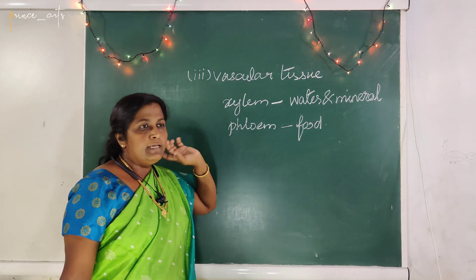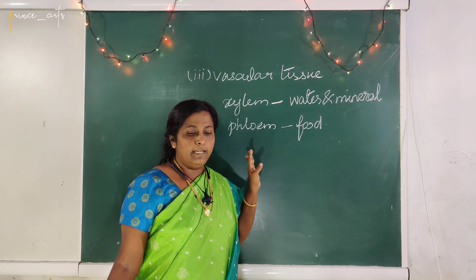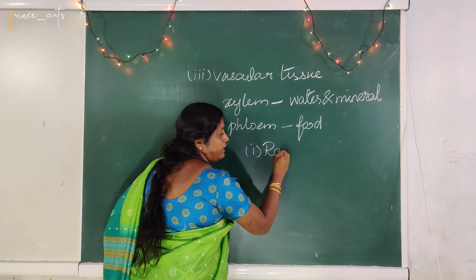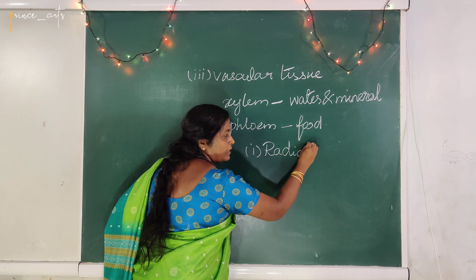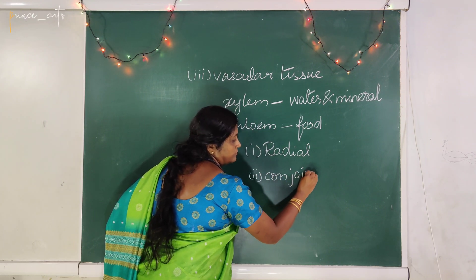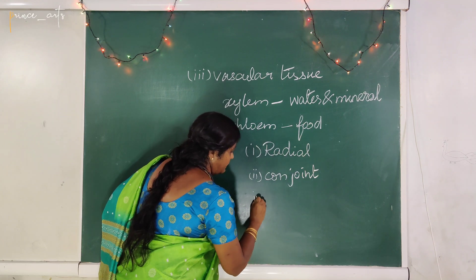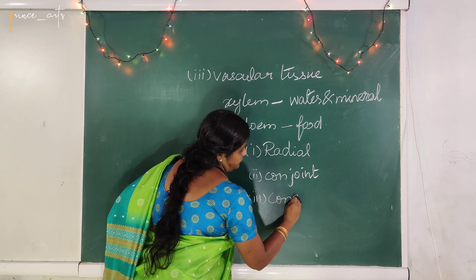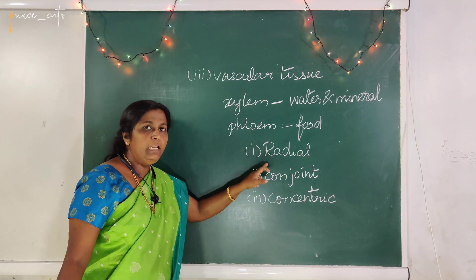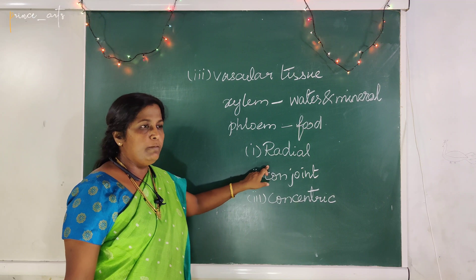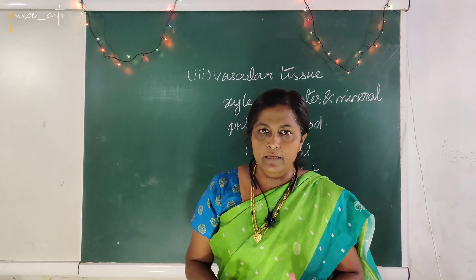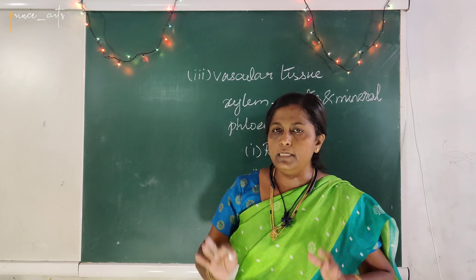There are three types of vascular bundles. The first one is radial bundle, the second one is conjoint, and the third one is concentric. In the radial bundle, xylem and phloem are arranged alternately along the radius.